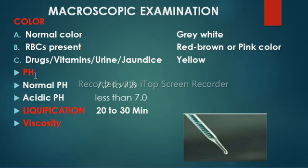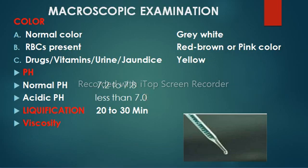pH is measured by litmus paper or combi-3 sticks. The secretions of the prostate and seminal vesicle contribute to seminal pH. The normal pH of semen is 7.2 to 7.8. When the pH is acidic, it is less than 7.0. Acidic pH occurs in low volume and low density samples, usually indicating bilateral absence of vas deferens and ejaculatory duct obstruction. pH increases with time as the natural buffering capacity of semen decreases, therefore high pH is not clinically useful.